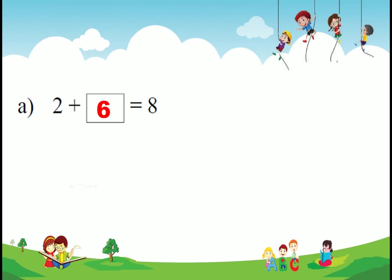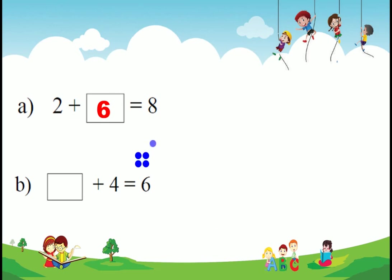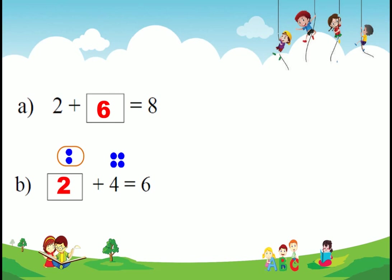In this way we do some more activities. Dash plus 4 equals 6. The sum of two numbers is 6, so we put 6 dots: 1, 2, 3, 4, 5, 6. In these 6 dots, 4 dots are moved from here — 4 dots relate to the number 4. The remaining dots are moved here. How many dots are there? 2. So 2 plus 4 equals 6.